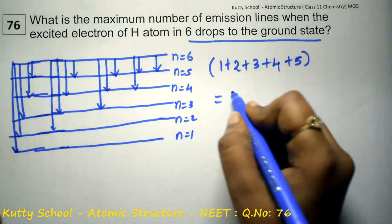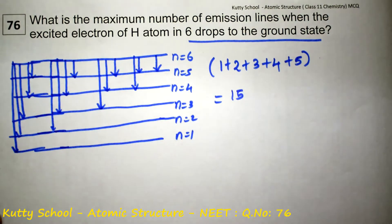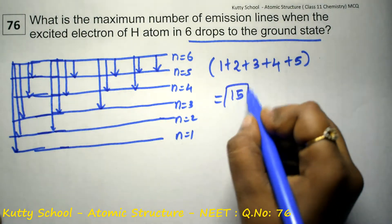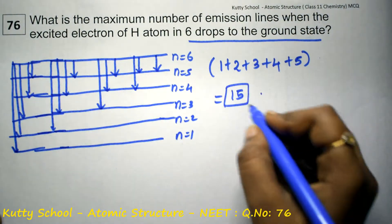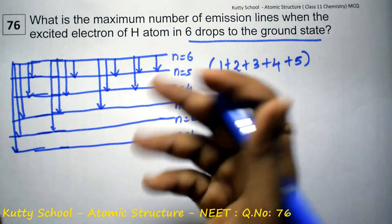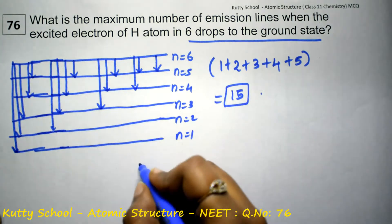So, calculating this: 5 + 4 + 3 + 2 + 1 = 15. That is equal to 15. So, the emission lines are 15. There is a formula for this too. Using the diagram representation makes it easy to find.